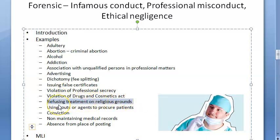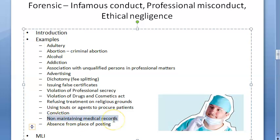Refusing treatment on the basis of religious grounds or any other bias is infamous conduct. Using touts or agents to procure patients is also wrong. Conviction by a court of law for a criminal act, failure to maintain medical records or provide them when asked, and absence from place of posting on more than two inspections all constitute professional misconduct.